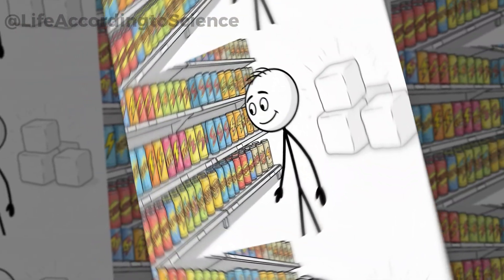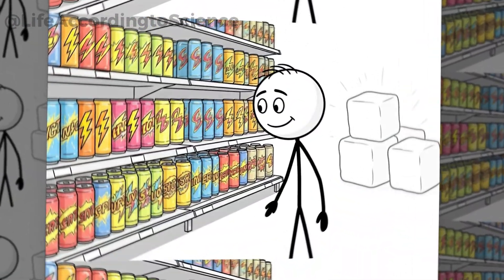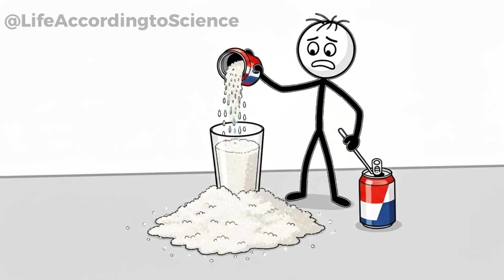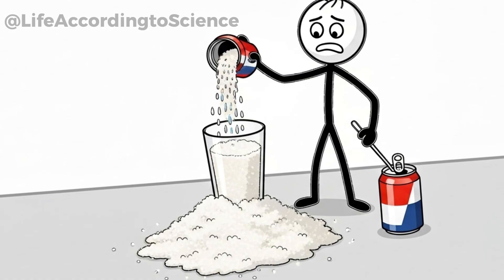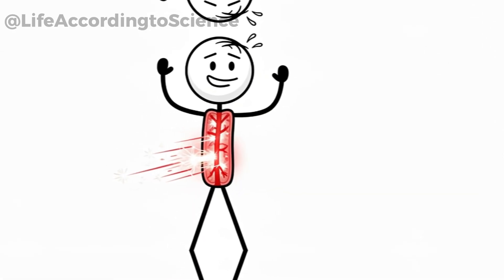Behind the flashy labels and promises of energy, there's another silent player in energy drinks. Sugar. Some cans contain more than 10 teaspoons of it, often more than a soda. This surge of glucose floods your bloodstream, giving you a quick jolt of energy, but it comes with a steep price.